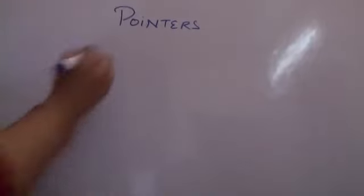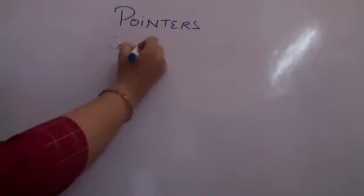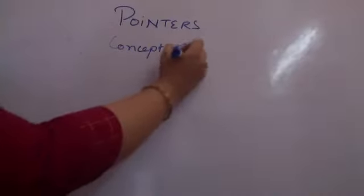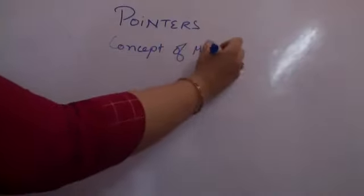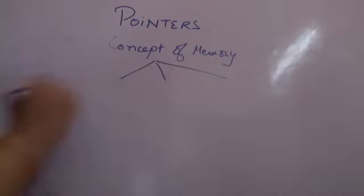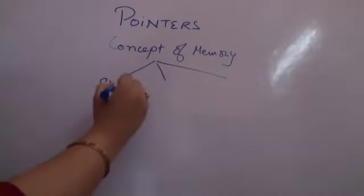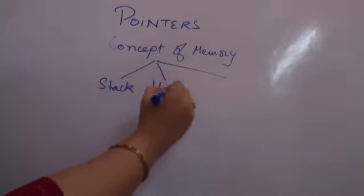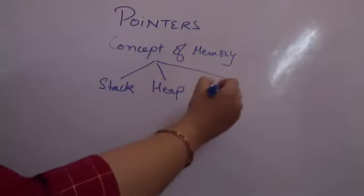Before moving on to pointers, we have to understand the concept of memory when we are using a C++ program. What kinds of memory are there that the program is using? There are three parts of the memory that the program is using. There is a stack, there is a heap, and there is a global memory area.